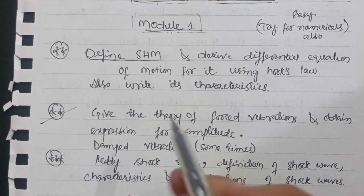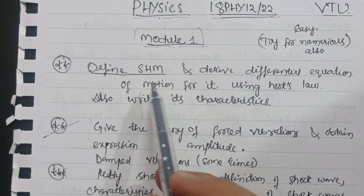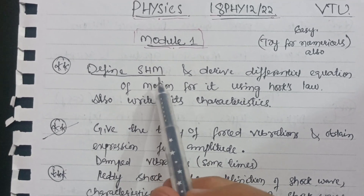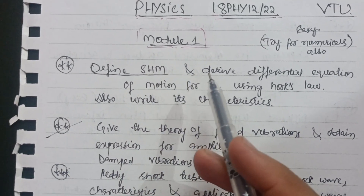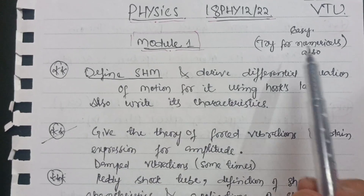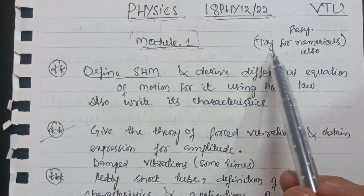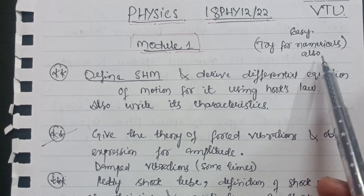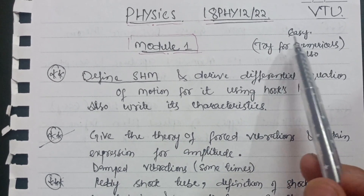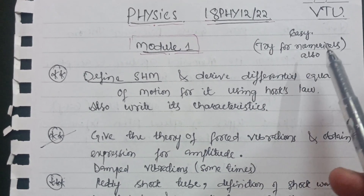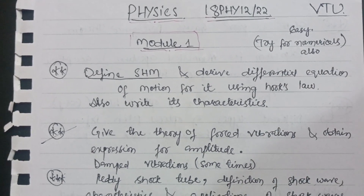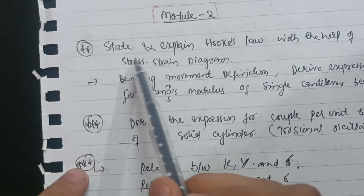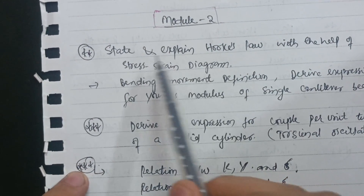For the numericals in Module 1, the problems are based on simple harmonic motion using x = A sin(ωt). These are relatively easy problems, so try the numericals as well. Moving to Module 2, there is one important question to focus on.